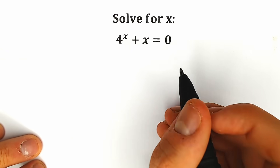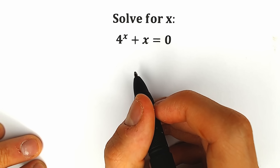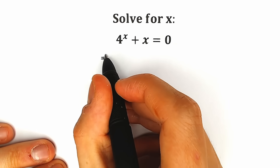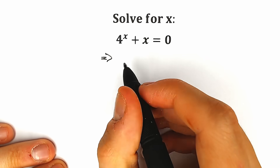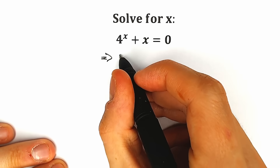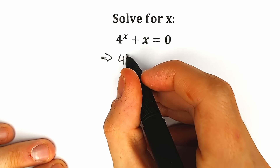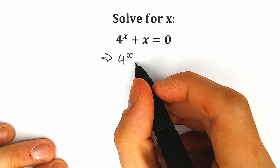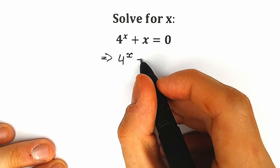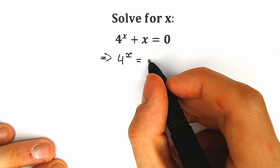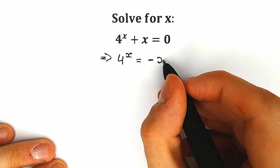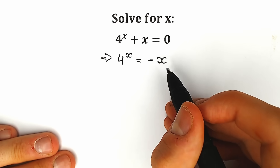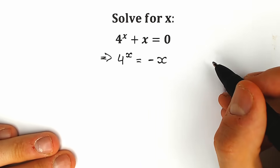Right now let's try to solve this question. I suggest this approach: first of all, let's leave 4 to the x on the left side, and move x to the right side with a negative sign, so we get 4 to the x equals minus x. And right now the tricky move, because 4 to the x equals minus x.